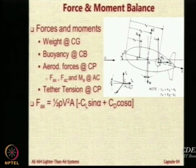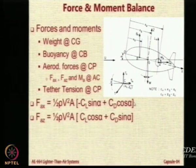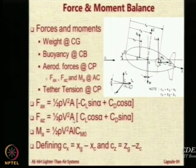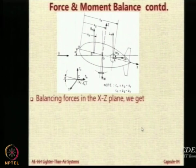If you take the balance of forces along the X direction, F_AX will be equal to the force L_A and this will involve alpha. The vertical and horizontal force components will be basically C_L sin alpha, C_D cos alpha, and the vertical force will be C_L cos alpha plus C_D sin alpha times half rho V squared, where A is the volume to the power 2/3. The moment is half rho V squared times A times L times CM0. I define differences C_X and C_Z which are the locations. Please look at the figure and help me in force balance in the X-Z plane.